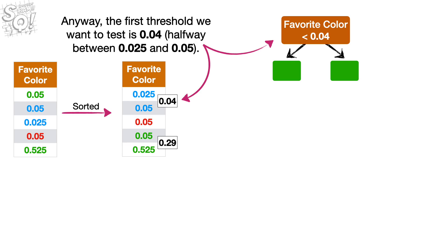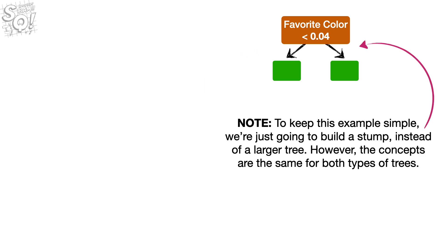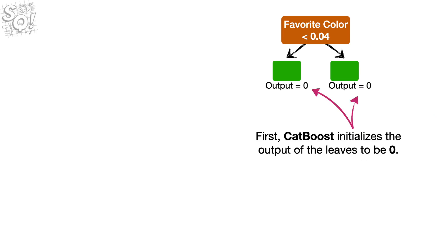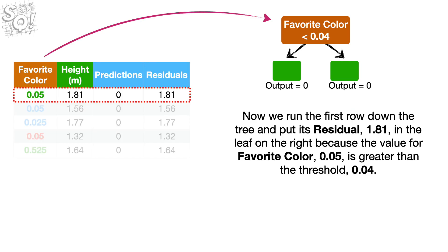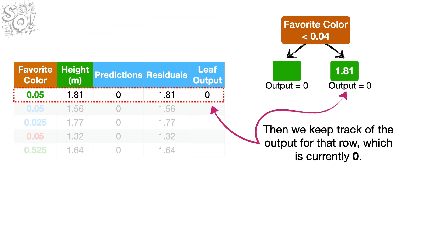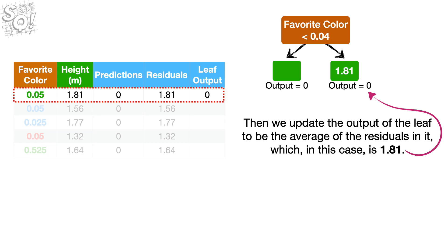The first threshold we want to test is 0.04. Note, to keep this example simple, we're just going to build a stump instead of a larger tree. However, the concepts are the same for both types of trees. First, CatBoost initializes the output of the leaves to be 0. Now we run the first row down the tree and put its residual, 1.81, in the leaf on the right, because the value for favorite color, 0.05, is greater than the threshold, 0.04.